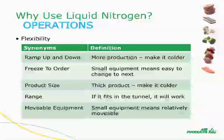The flexibility of liquid nitrogen systems stems from its extraordinary cold: 320 degrees below zero. This allows liquid nitrogen systems to operate across a broad range of temperatures, from simply cool to hundreds of degrees below zero. You are able to ramp production up and down — the liquid nitrogen use simply follows the pattern. You can freeze to order, and smaller equipment makes this much easier. Different product sizes work well by simply making the equipment a bit colder or using a bit more nitrogen. A broad range of products are possible; again, the turndown of liquid nitrogen allows for this.